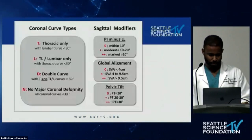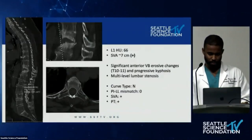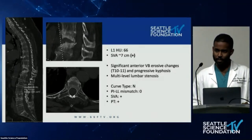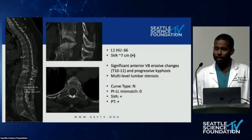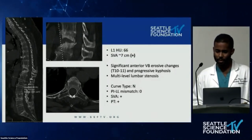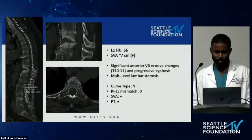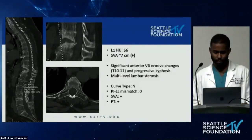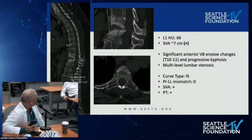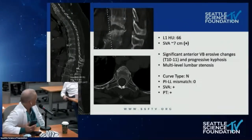Chapman asks whether the Schwab classification captures underlying pathology such as spinal column collapse, fracture, and erosion — noting this patient has a very focal problem with a fracture in an extremely osteopenic skeleton. Are bone density and fracture significant modifiers that should be quantified as part of the deformity assessment?